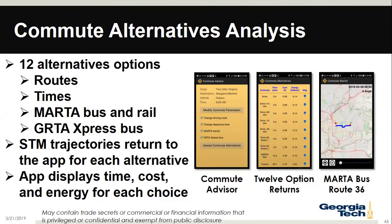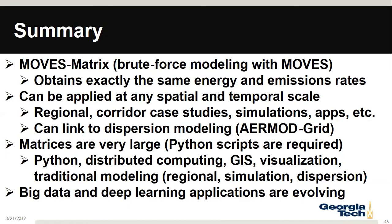The application for ARPA-E was to take those shortest path trajectories and give users options — whether to change driving route, departure time, or take transit. Based on click boxes selected on the left, users get back different options showing travel time, cost, and energy use in gallons of gasoline equivalent. The final route selected in our example was MARTA bus route 36. MOVES Matrix is brute force modeling — running through every combination and creating a huge matrix queried with Python scripts — applicable at any temporal or spatial scale: regional analysis, corridor studies, simulations, and linkable to AirMod for screening tools.